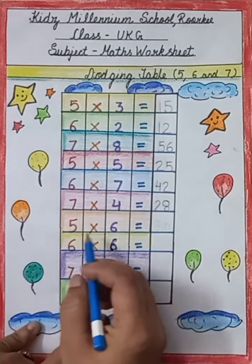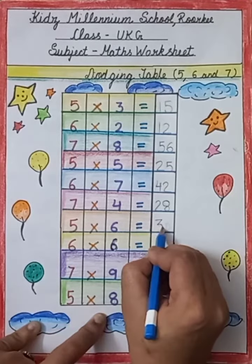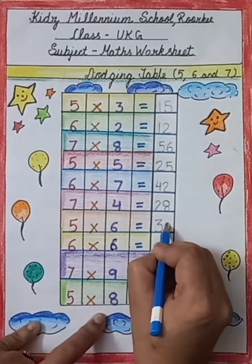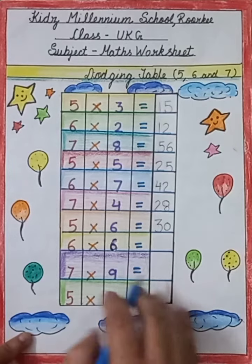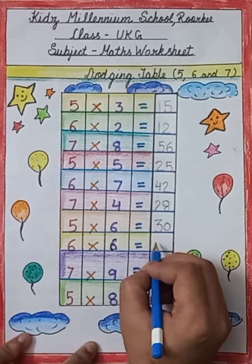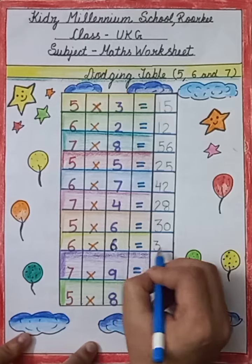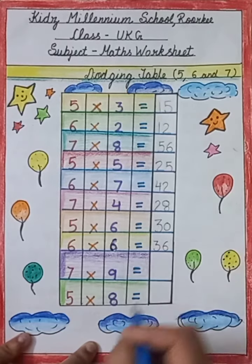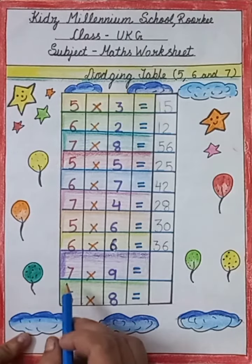This is 5 into 6 equals to 30, and we will speak like this: 5 6 or 30. This is 6 into 6 equals to 36, and we will speak like this: 6 6 or 36.